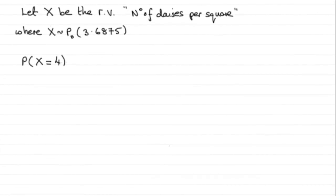Now in the last part of the question, we've got to work out using the mean from the previous part - that's 3.6875 - the probability that there's exactly four daisies found in a randomly selected square. So it's going to be the probability that X equals 4.